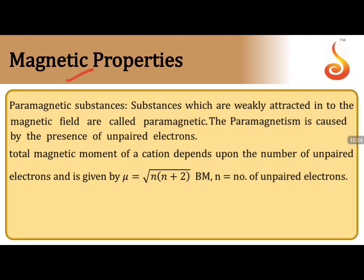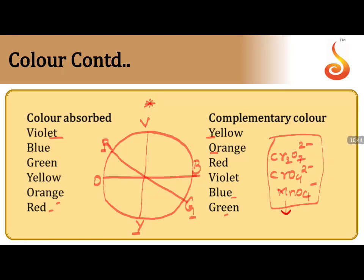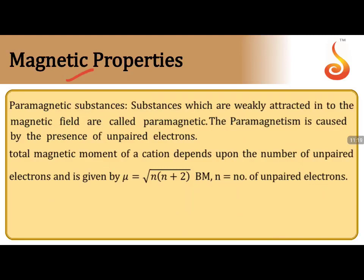Before moving to magnetic properties, there is an important exception: species like Cr₂O₇²⁻, CrO₄²⁻, and MnO₄⁻ have no unpaired electrons yet they exhibit color. This is due to charge transfer phenomena. Dichromate, chromate, and permanganate exhibit color even without unpaired electrons in their valence shells — this is due to charge transfer phenomena, which is a very important exceptional point.